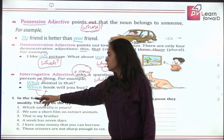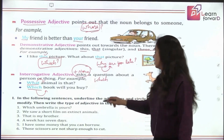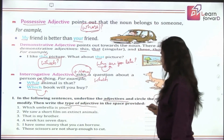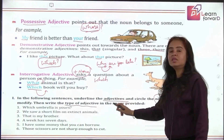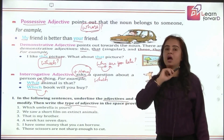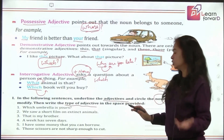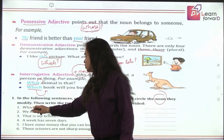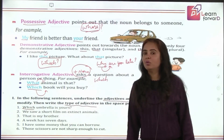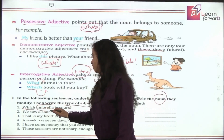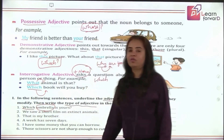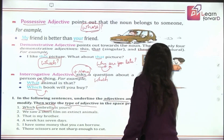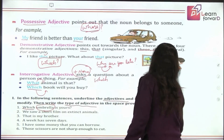Let's do the exercise: underline the adjective, circle the noun it modifies, and write the type of adjective. First sentence: 'Which umbrella is yours?' We underline 'which,' and the noun it describes is 'umbrella,' so we circle it. What type of adjective is this? That is interrogative adjective.